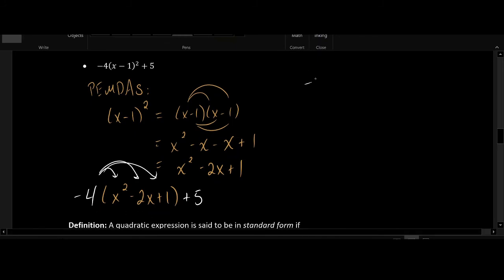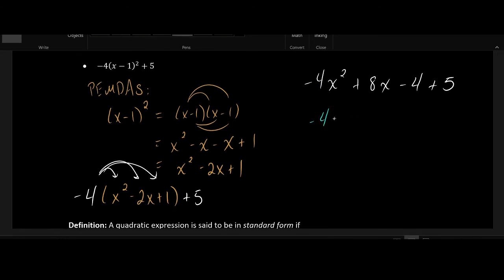So I get -4x². Negative 4 times minus 2x is plus 8x. Negative 4 times plus 1 is negative 4, and then plus 5 comes in from the end. So if we combine the like terms, we have -4x², plus 8x, and if we combine the constants in total we have plus 1.